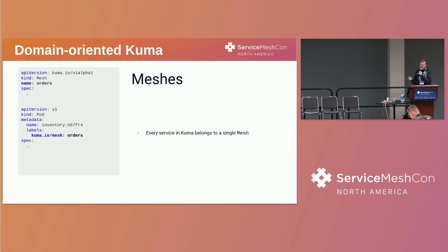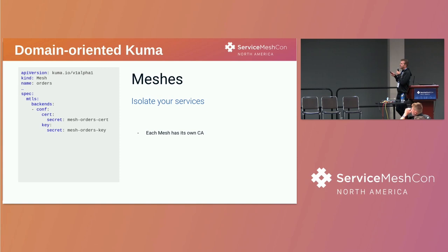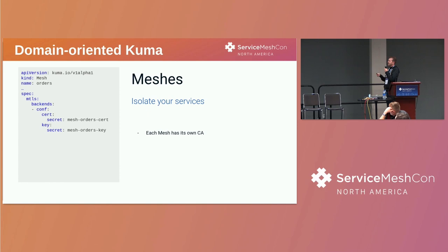The first way we're going to do that is the mesh resource that Kuma offers. The word mesh can refer to the entire control plane or the whole data plane, but Kuma also offers a resource called mesh, which is a way to partition your data plane into separate meshes. It does this because every mesh defines its own CA. For every service that ends up in a mesh, MTLS guarantees it can only communicate with other services in that mesh via MTLS, given their individual CAs.